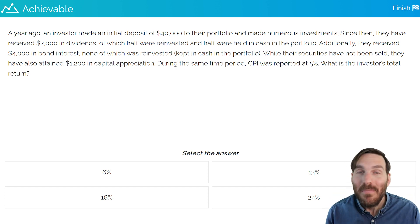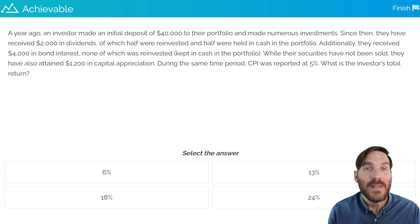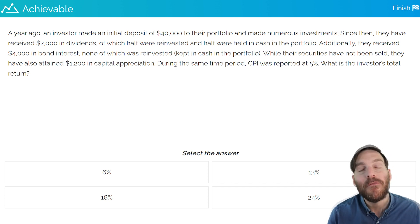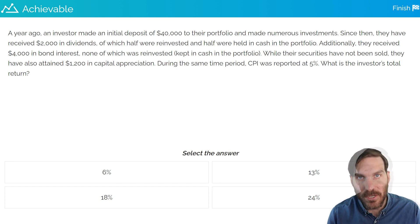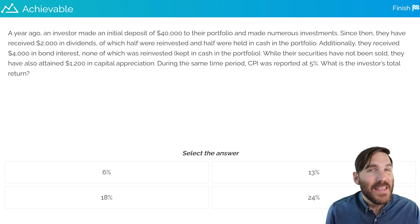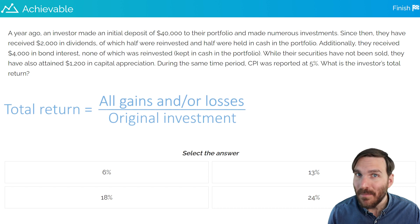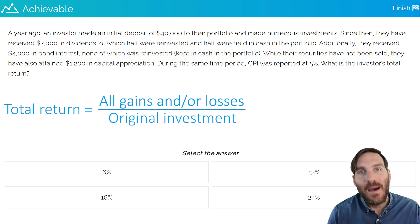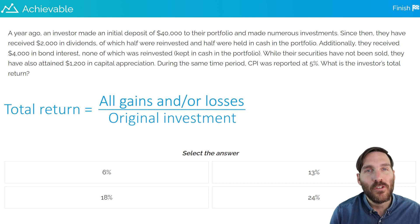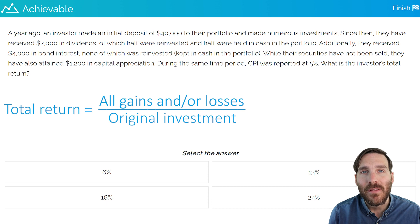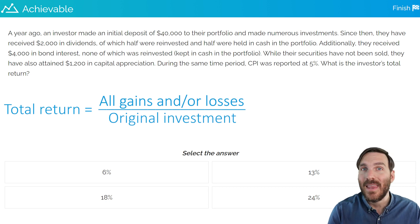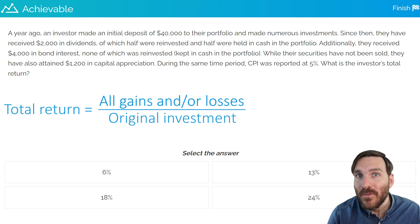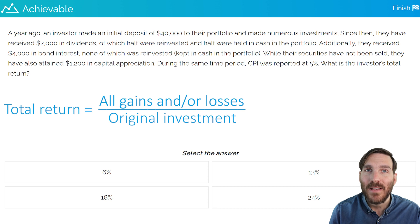Again, that's a lot of information, and you might stumble upon a question like this on the actual exam. So let's be prepared. Let's work through it together and demystify it. The first thing we're going to do is talk about the total return calculation. As we discussed in the Achievable materials, the easiest way to remember it is all gains and/or losses compiled together in the numerator — on the top of the formula — divided by the original investment in the denominator at the bottom of the formula. If you think about the name total return, what we're trying to figure out is the overall rate of return that the investor has received since they've made this original investment. When we say all gains and/or losses, we're talking about any kind of dividends received from stock, any kind of interest received from a bond, or any type of capital gain or capital loss on an investment. And that capital gain or capital loss could be realized or unrealized.